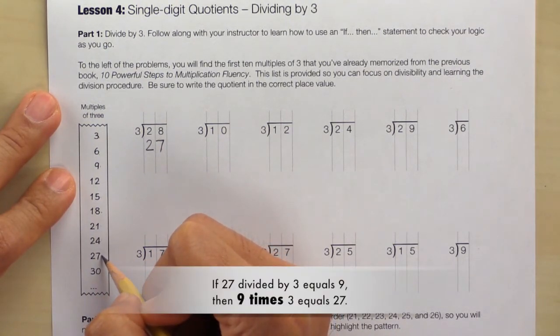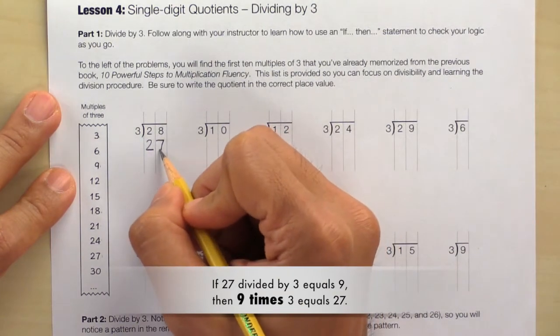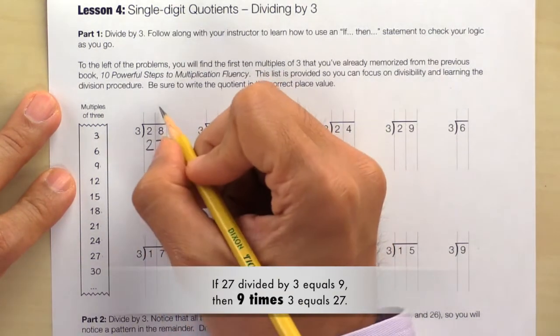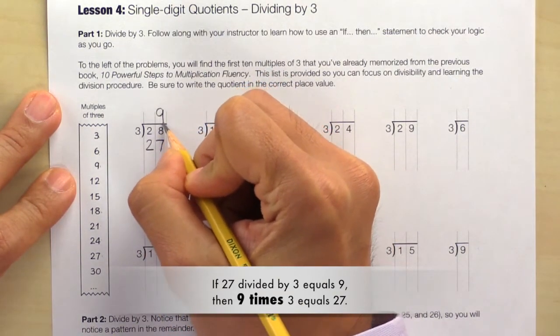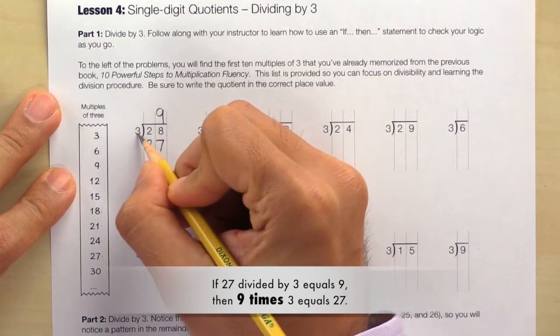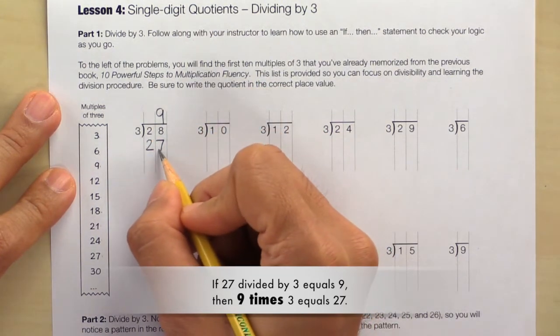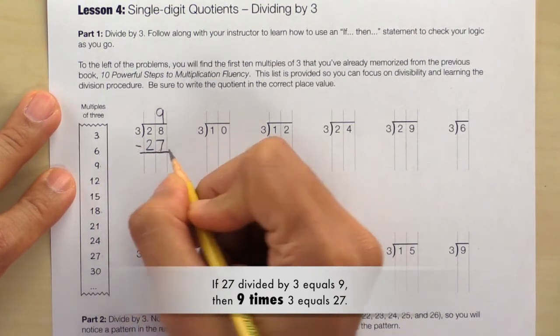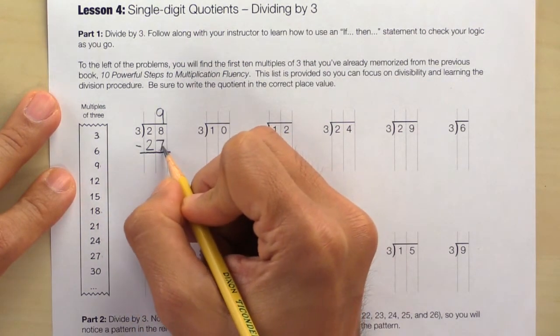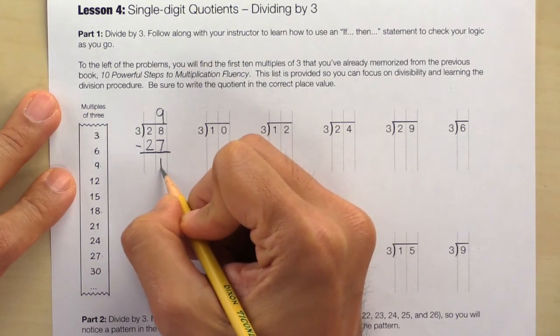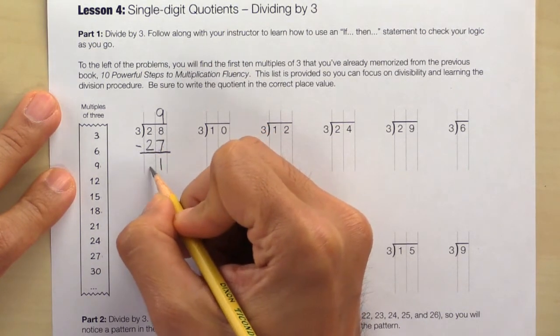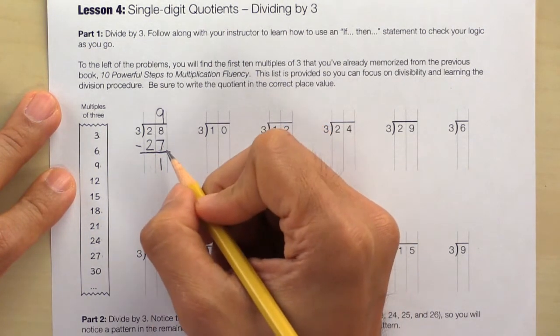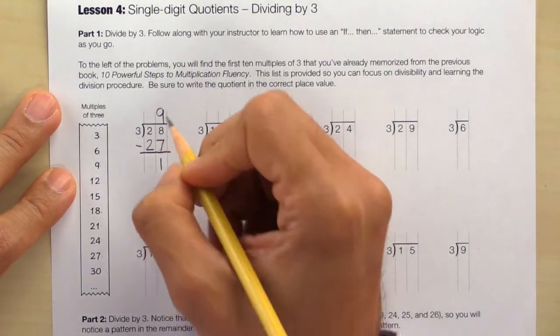So the if-then statement is, if 27 divided by 3 equals 9, then 9 times 3 equals 27. That's true. So let's subtract. 8 minus 7 equals 1. 2 minus 2 gives us 0. We'll leave it blank. And our final answer is 9 remainder 1.